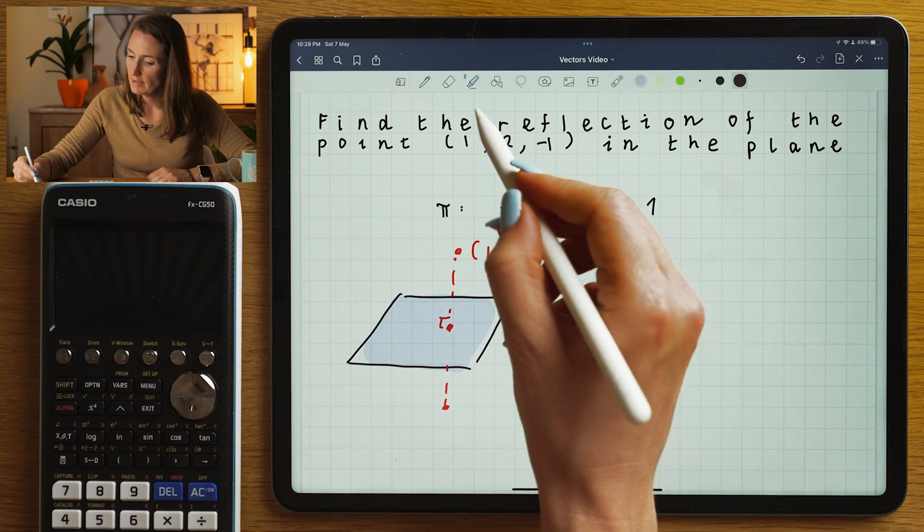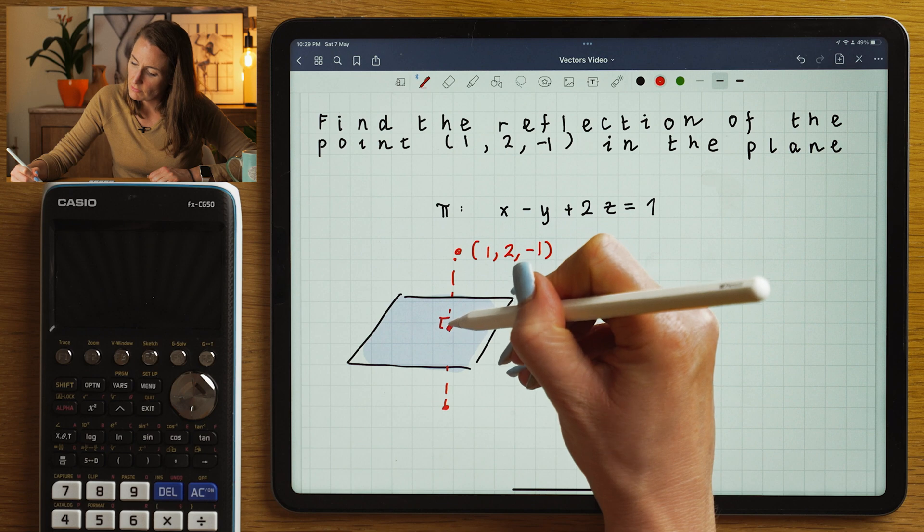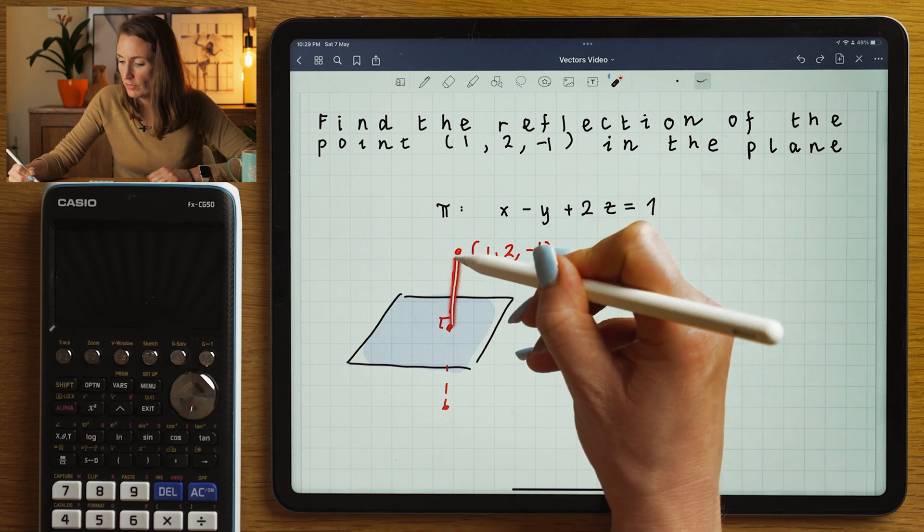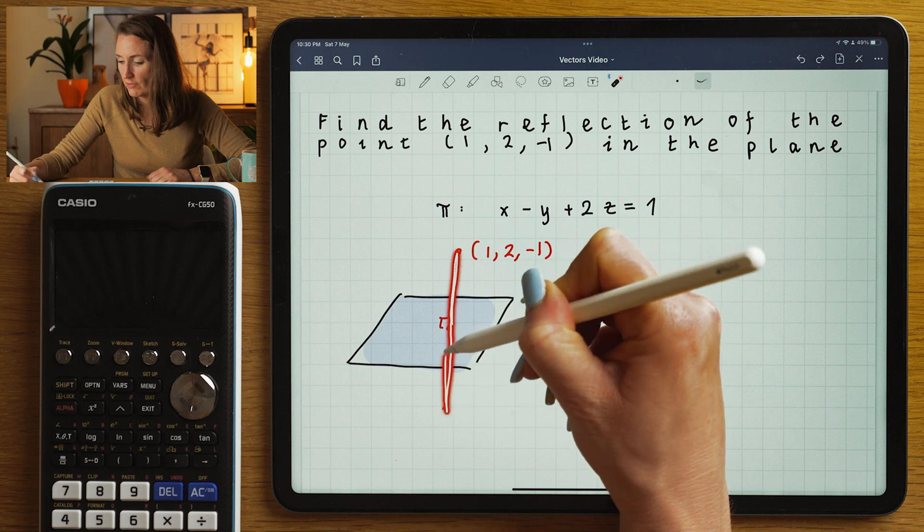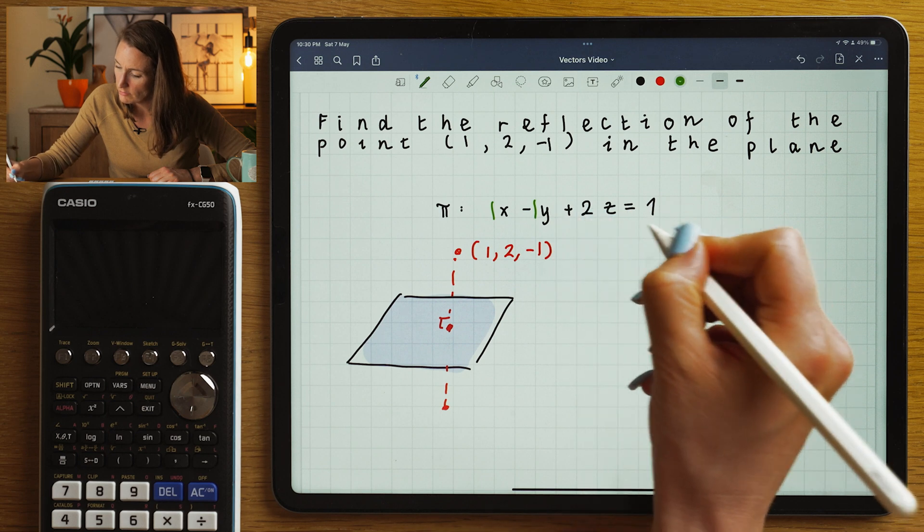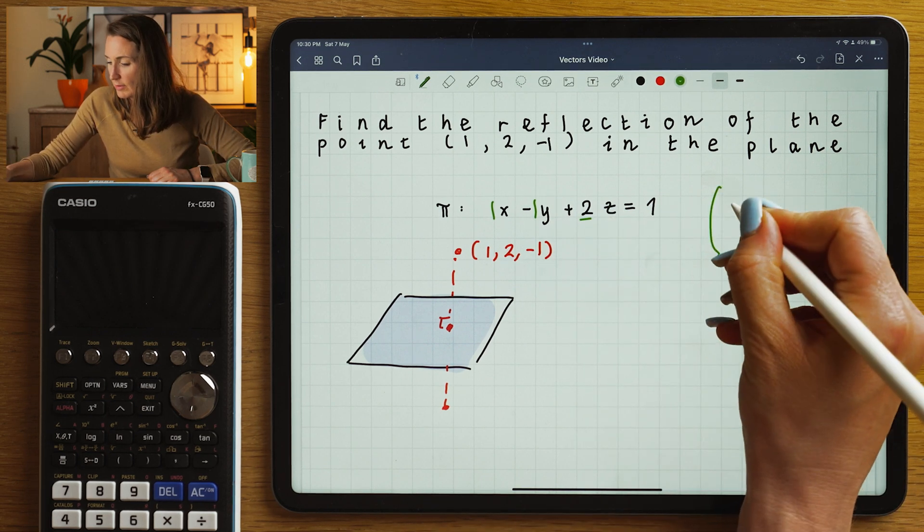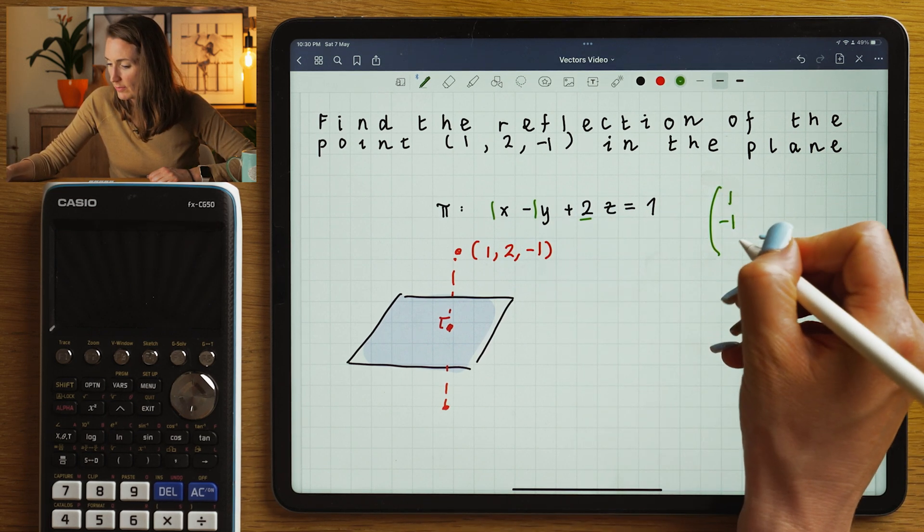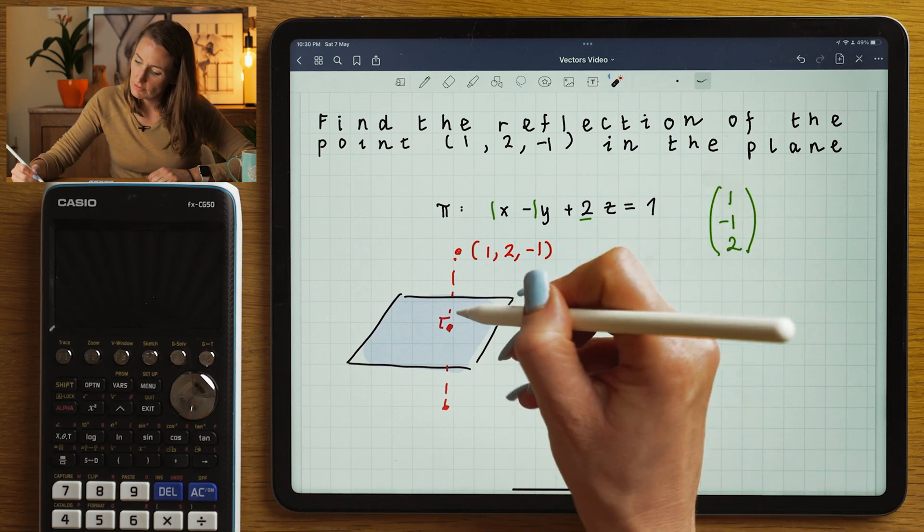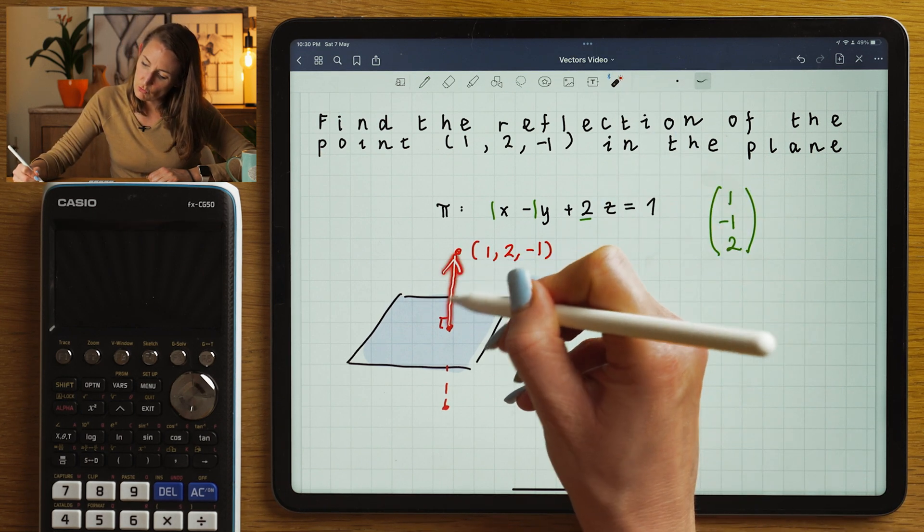The first important thing to think is, what is the perpendicular to the plane? Because if I know the perpendicular to the plane, I know the direction vector of this line. So if I look at the coefficients of the plane, one minus one, two, that's going to give me the direction vector. That is going to be the normal to the plane.